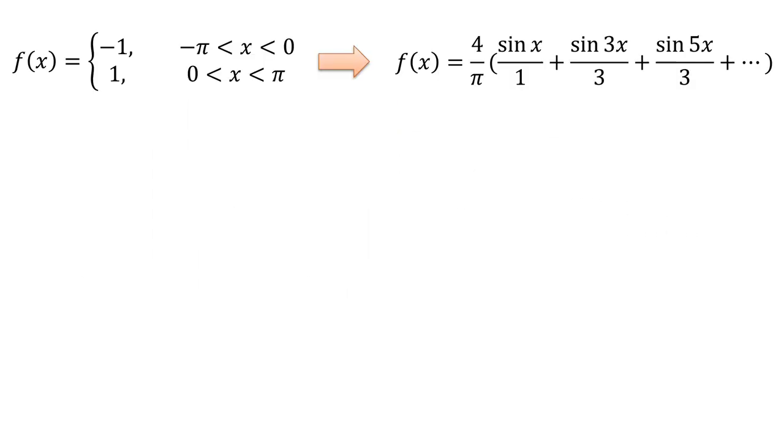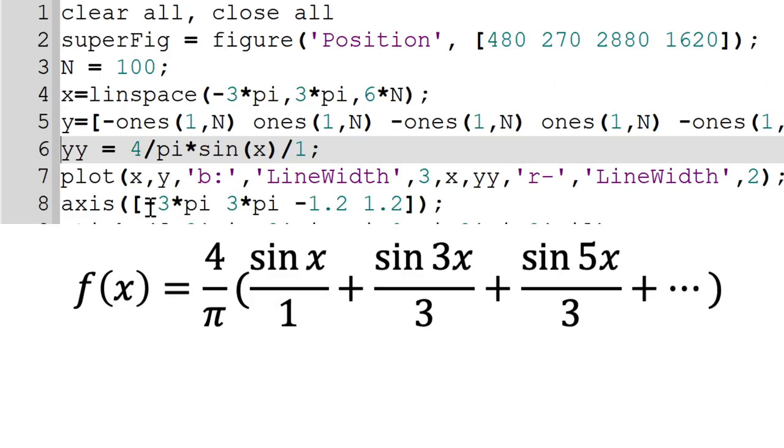To plot a Fourier series of fx, we can generate another variable yy for y coordinate of a Fourier series. The first term is 4 over pi sine x over 1. We can simply type yy equal to 4 over pi sine x over 1.